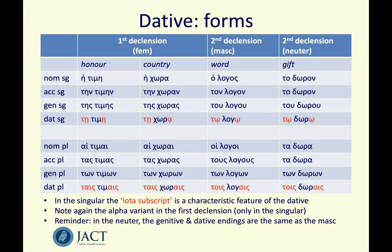In the plural, note a similarity in sound between 'tais timais' and 'tois logois' — the iota-sigma ending at the end of the dative plural forms is a useful echo to look out for. Note again that in the singular of the first declension there is the alpha variant: 'tēi khōrai' would have an alpha in the dative singular. In the plural, 'timē' already uses an alpha. And a reminder that the genitive and the dative of the neuter — for example 'dōron' — are the same as the masculine, so there's no new learning to do there.